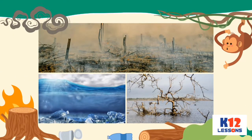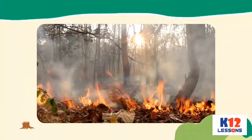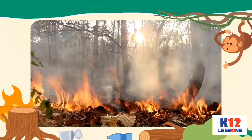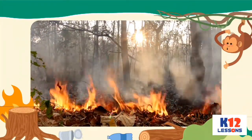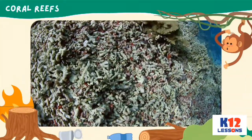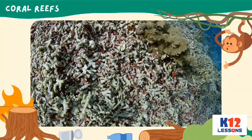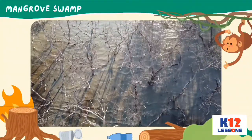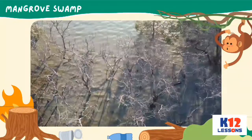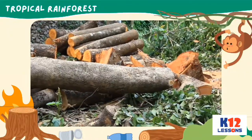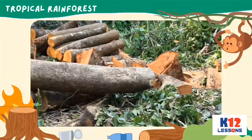Today, tropical rainforests, coral reefs, and mangrove swamps are disappearing from the face of the globe. Despite growing international concern, these are continuing to be destroyed. These destructions have a global impact through species extinction and the loss of important ecosystem services and resources.